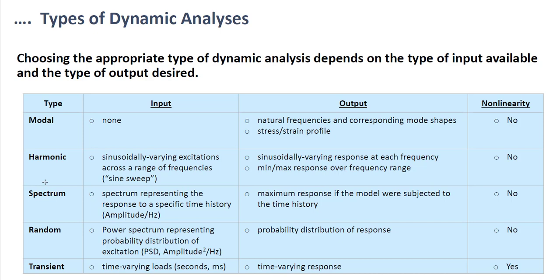For spectrum analysis, the spectrum represents the response to a specific time history, which is the input. The output will be the maximum response if the model was subjected to that time history. This is also a linear analysis. For random vibration analysis, the power spectrum representing the probability distribution of excitation is the input, and the probability distribution of response is the output — also linear. In transient analysis, time-varying loads are the input and time-varying response is the output. This is a nonlinear analysis.